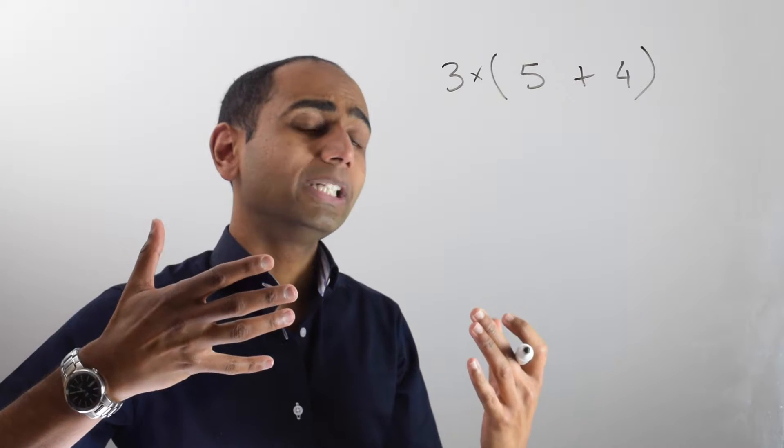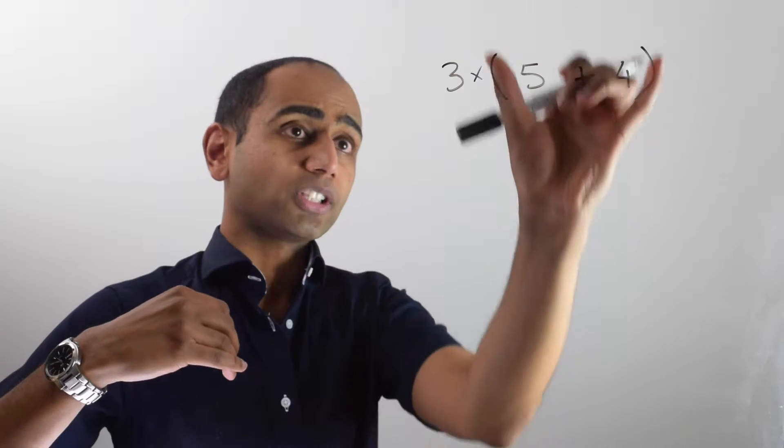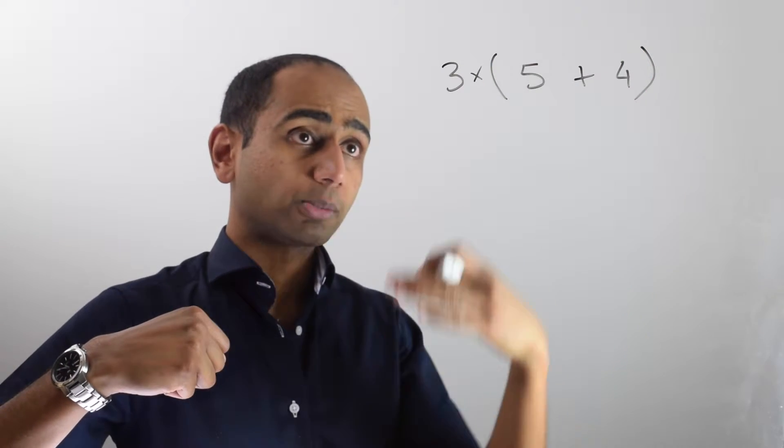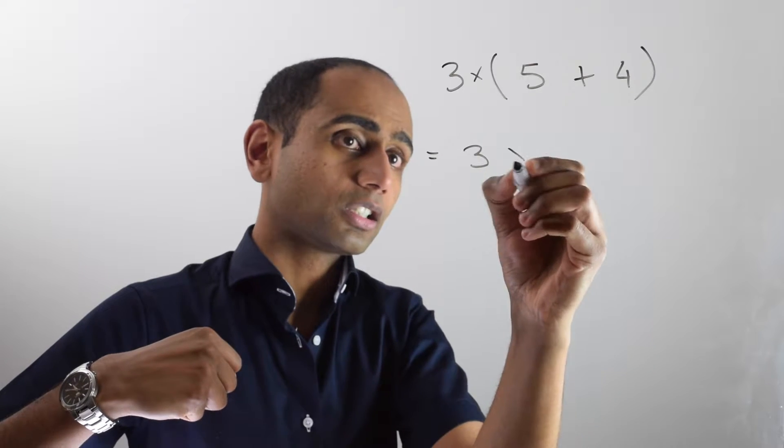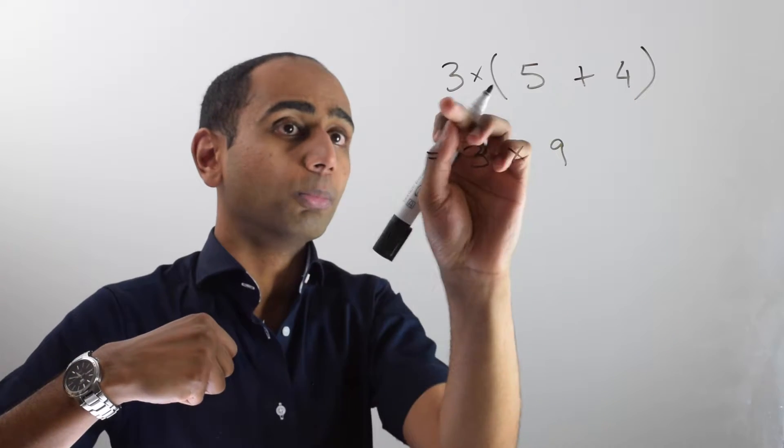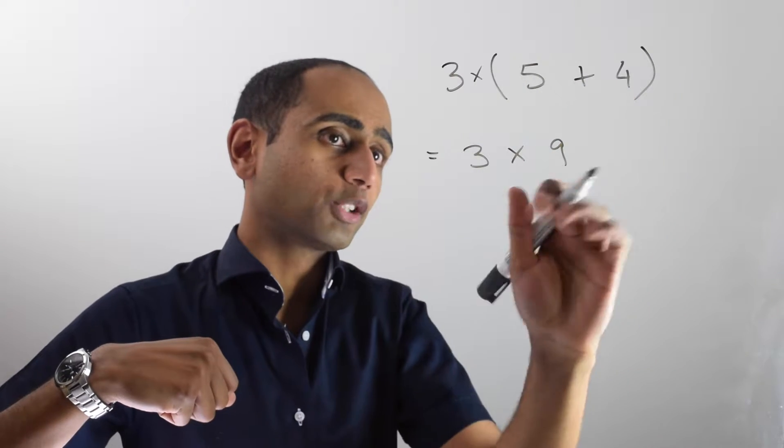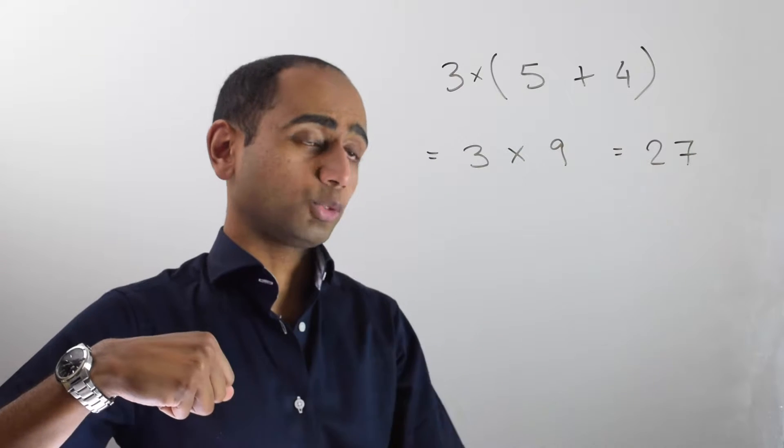How you would normally do this question is using BIDMAS. You'd spot that the brackets are the thing that you would do first, B for brackets. So what this would be is 3 times (5 + 4), which is 9. We're going to add them together before multiplying by 3. And 3 times 9 is 27. So we get an answer of 27.